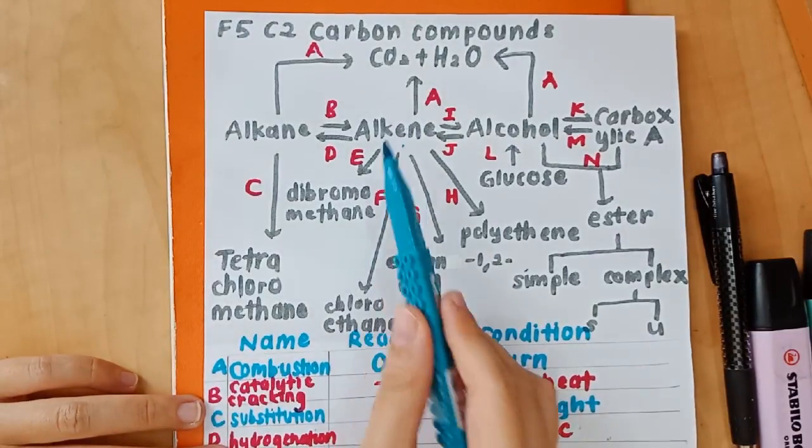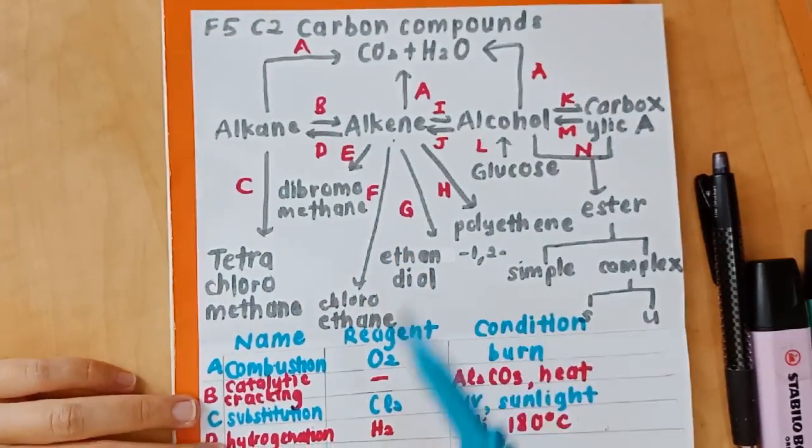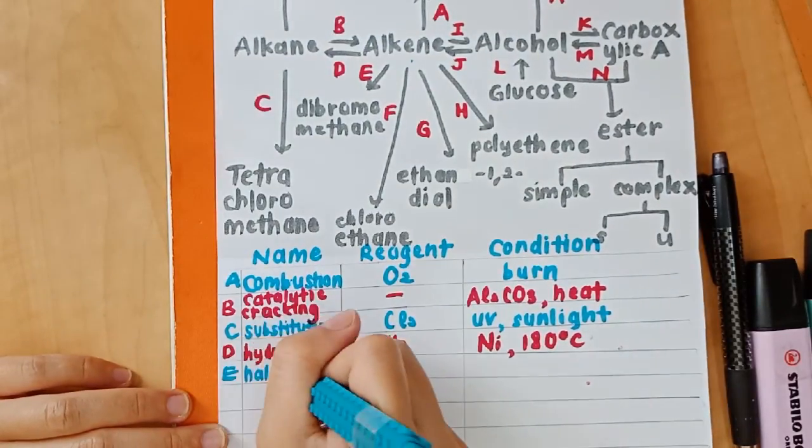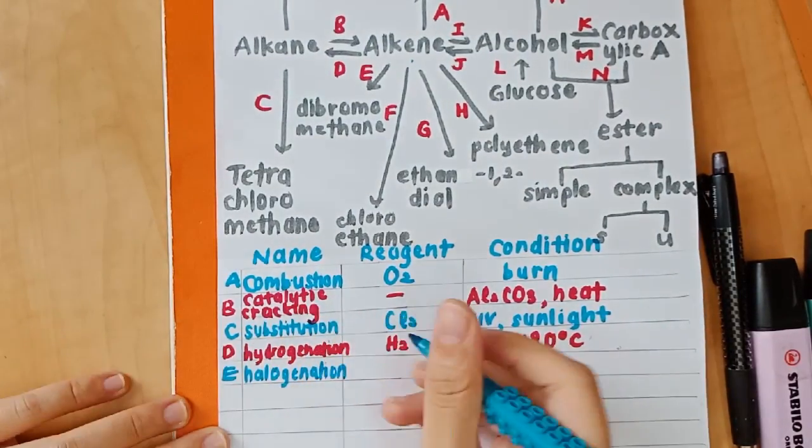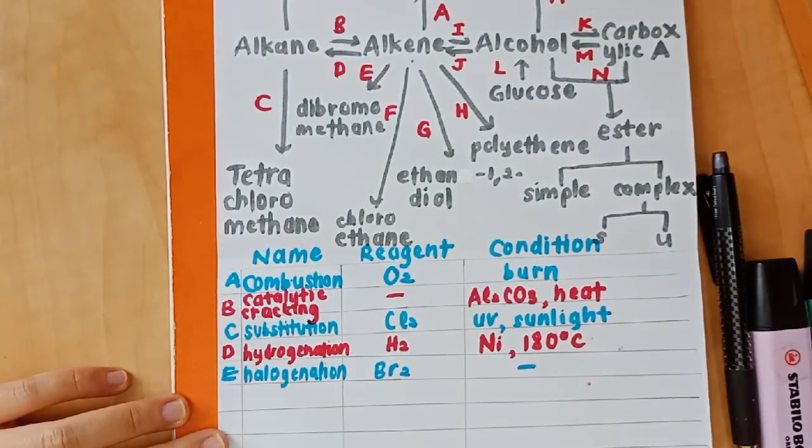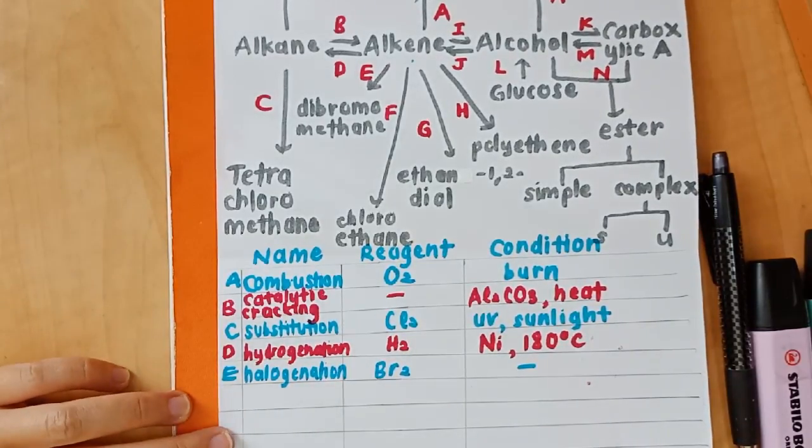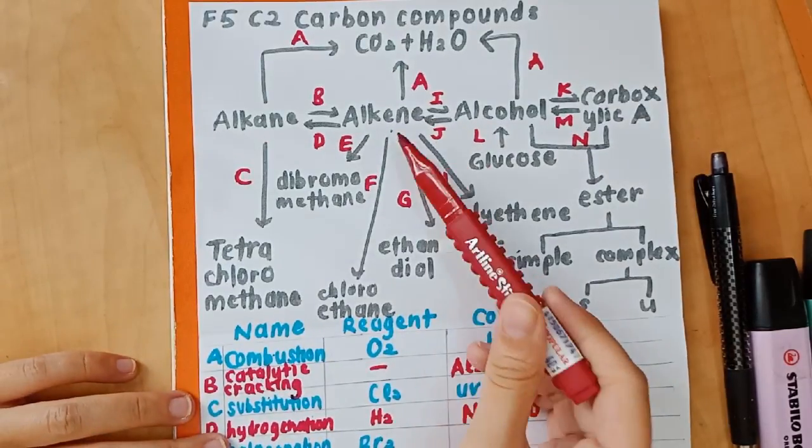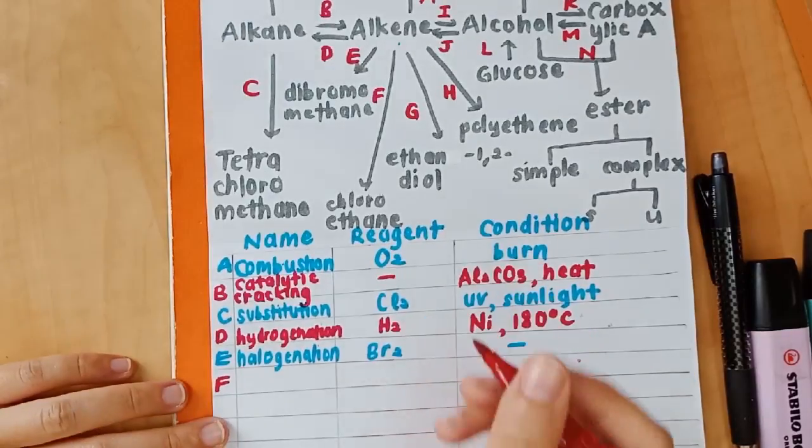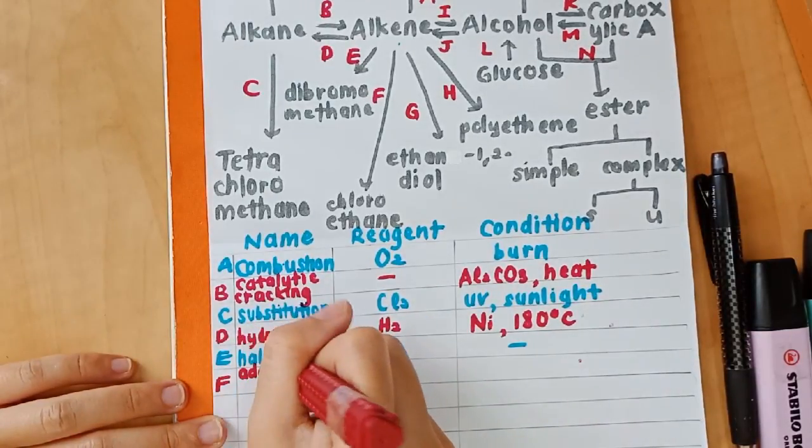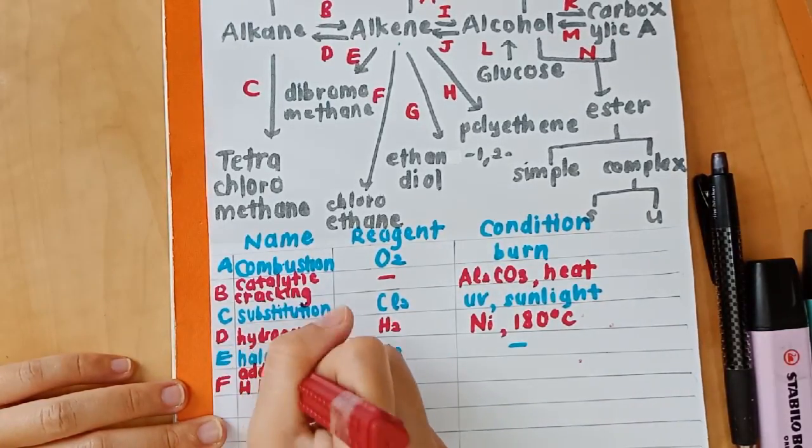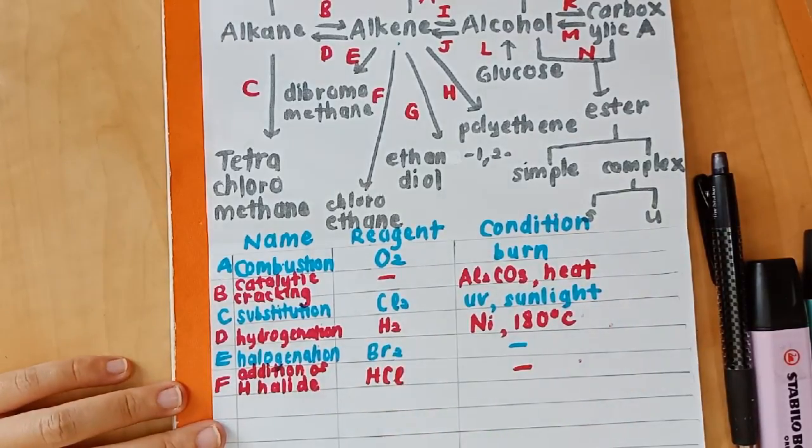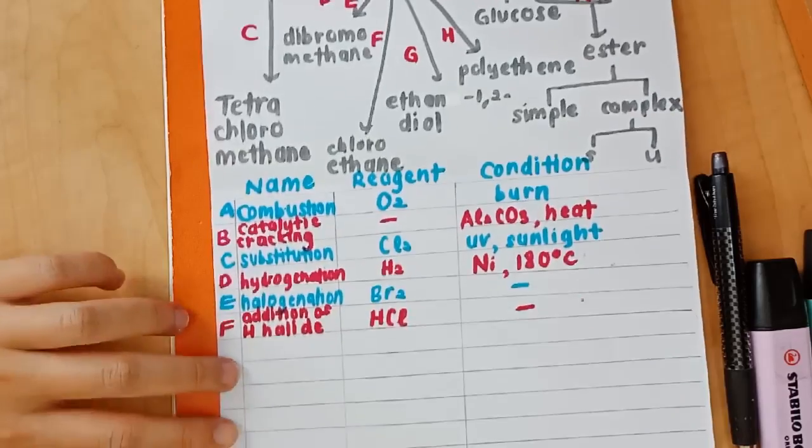Conditions are the stuff you write on top and below of the arrow. And then E from alkene to dibromomethane. We need halogenation. Br2. There is no condition for this. And then F. F is from alkene to chloroethane. It is the addition of hydrogen halide. So HCl. And there is no condition for this.